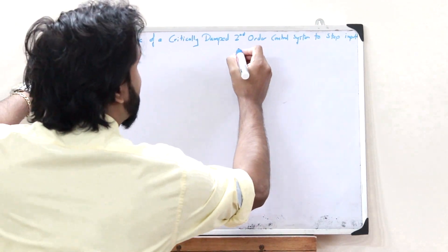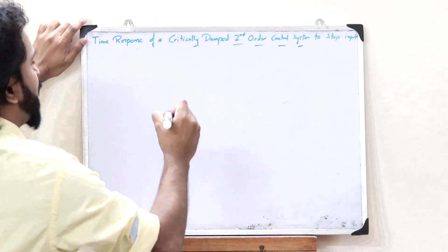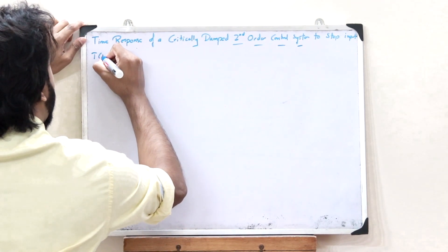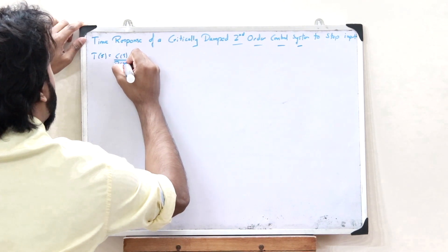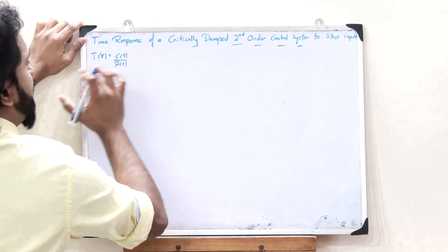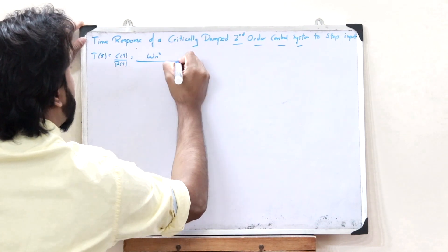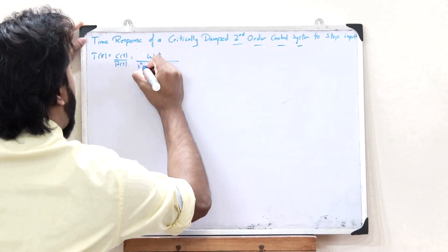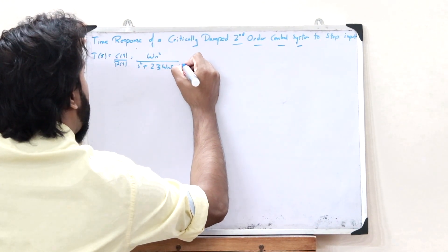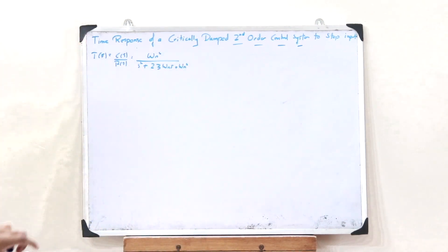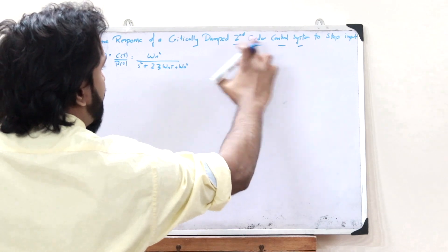We know for a fact that in the case of a second order control system, the transfer function is given as T(s) = C(s) / R(s), which is the output divided by the input, which is equal to omega_n squared divided by s squared plus 2·zeta·omega_n·s plus omega_n squared. This is the transfer function of a second order control system.